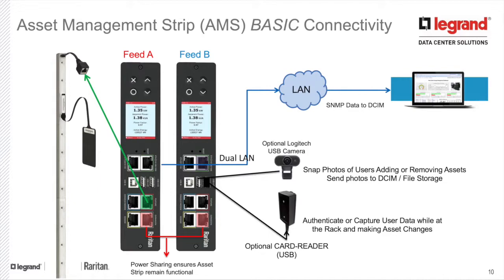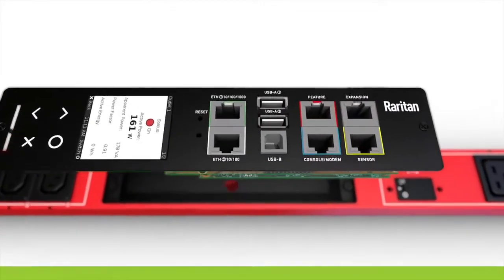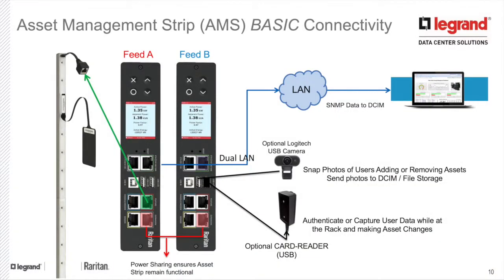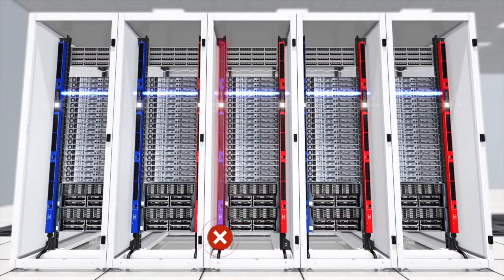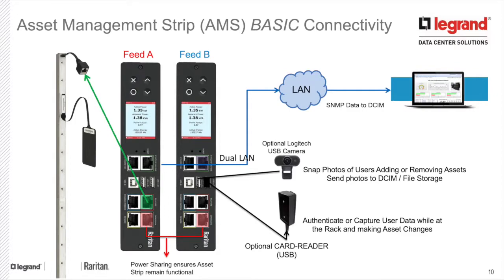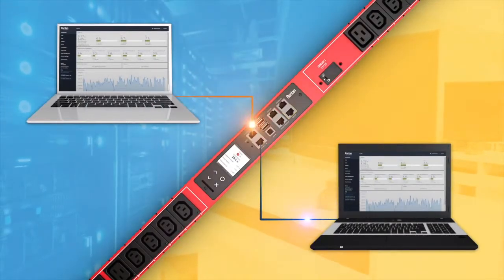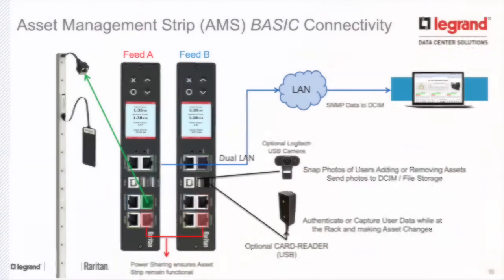If we look at how the asset management strip is connected using intelligent rack PDUs, you'll see that the asset strip on the left is connecting to the feature port. This feature port is given a secondary power source from the second rack PDU. The rack PDUs provide dual network interfaces, so if you needed to get access to the asset information from one or more networks, this allows you to get access to your asset information.